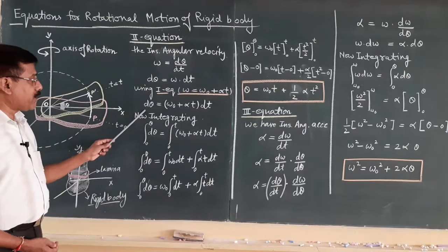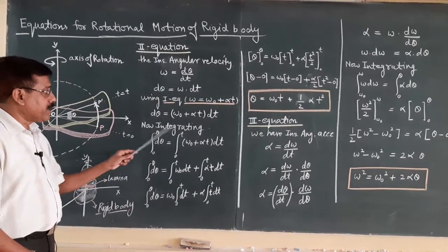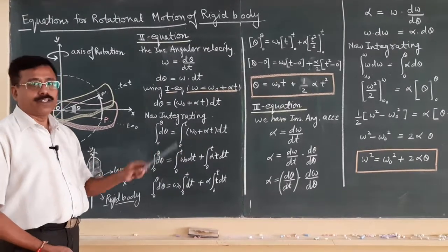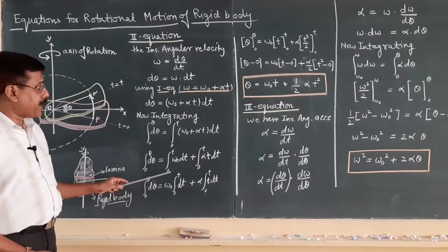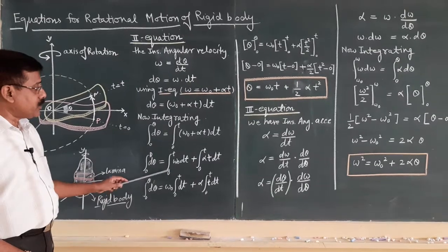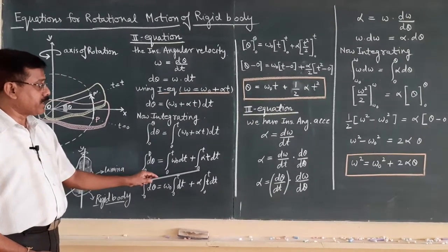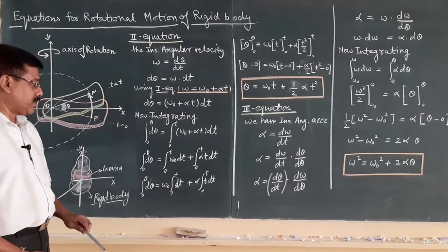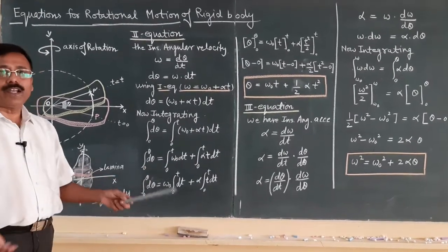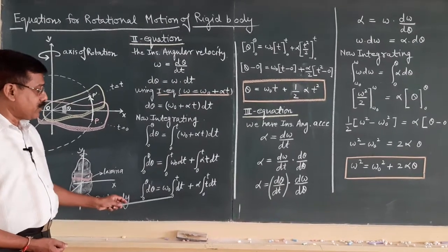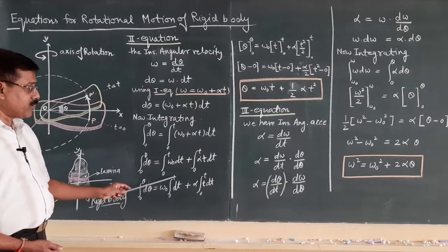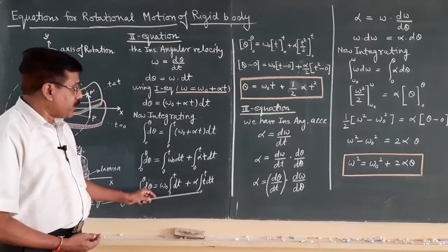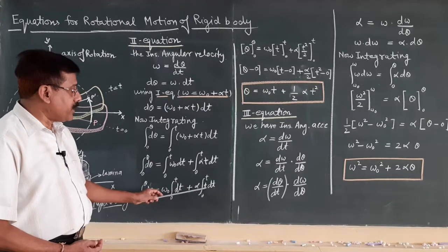The limit on the left side will be 0 to theta, and on the right side 0 to t of (omega-zero plus alpha t) dt. Splitting the right side: the first term is the integral from 0 to t of omega-zero dt, and the second term is the integral from 0 to t of alpha t dt. Taking constants outside: omega-zero times the integral of dt from 0 to t, and alpha times the integral of t dt from 0 to t.